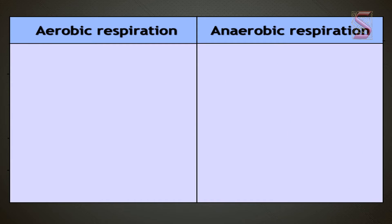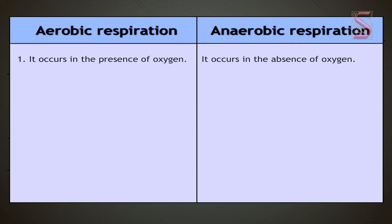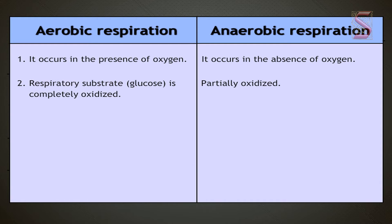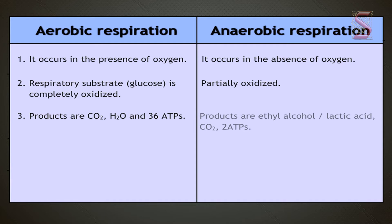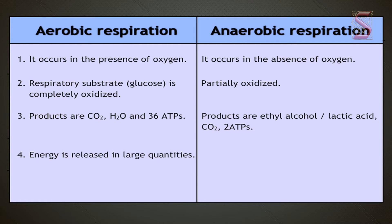Let us now differentiate between aerobic and anaerobic respiration. Aerobic respiration occurs in the presence of oxygen; anaerobic respiration occurs in the absence of oxygen. In aerobic respiration, glucose is completely oxidized, whereas in anaerobic respiration it is only partially oxidized. Products of aerobic respiration are carbon dioxide, water, and 36 ATPs; anaerobic respiration produces ethyl alcohol, lactic acid, carbon dioxide, and only 2 ATPs. Aerobic respiration releases energy in large quantities; anaerobic respiration releases lesser energy.